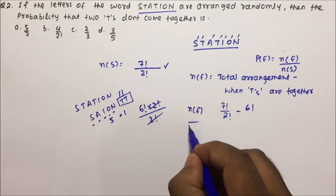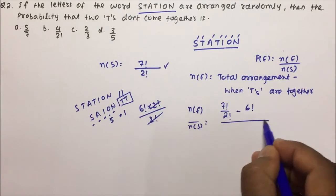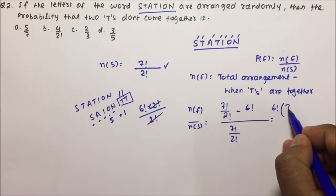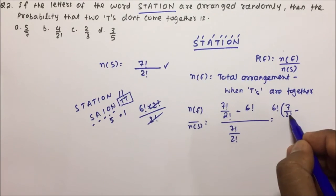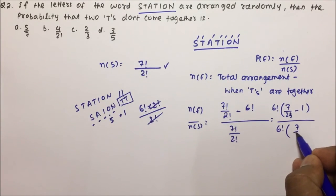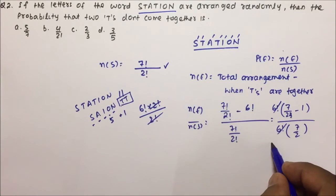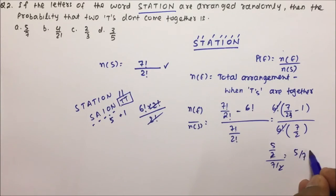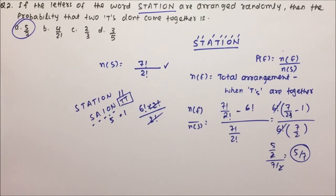So probability = NE/NS = (7!/2! − 6!) / (7!/2!). Taking 6! common from the numerator: 6!(7/2 − 1) = 6! · (5/2). Dividing by NS = 7!/2! = 6! · 7/2. The 6! cancels, giving (5/2) / (7/2) = 5/7. So 5/7 is the correct answer for question number 2. I suggest you solve this kind of question so that you get more familiar with it and can solve it whenever it appears.